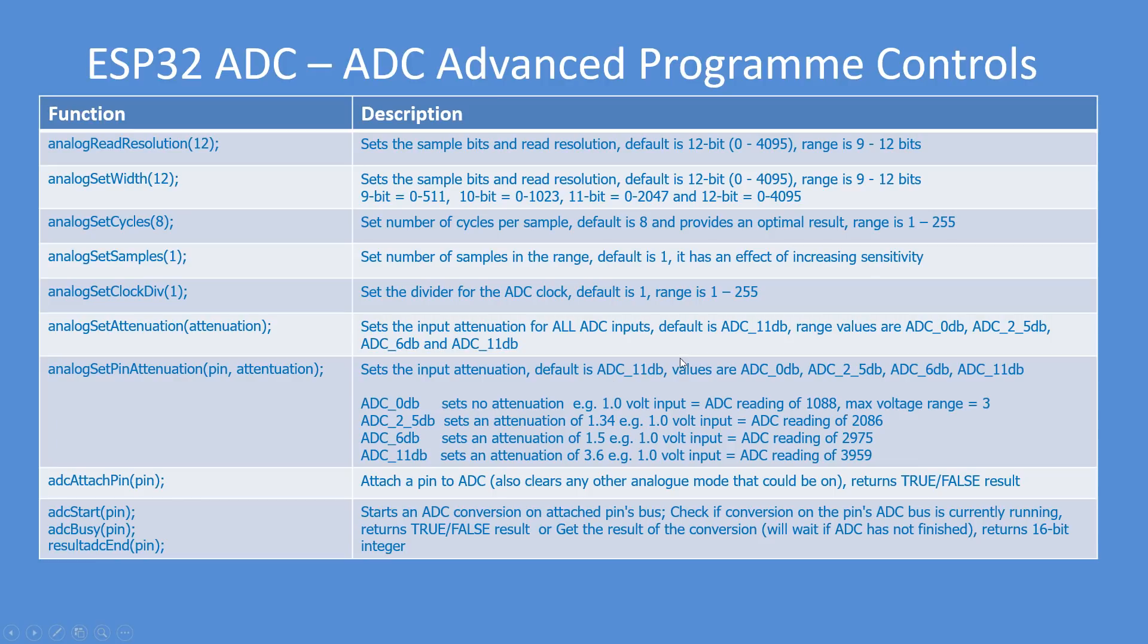Set the attenuation. These are the labels you have to use: ADC_0dB, 2.5dB, 6dB and 11dB, and you can set the attenuation on a particular pin. I'll go through it in a little bit more detail later, but the labels are always the same for the attenuation setting, either 1, 1.34, 1.5 or 3.6 is the divisor.